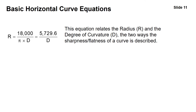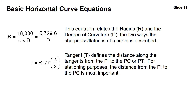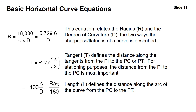Now for some equations. The radius and its relationship to the degree of curvature D describes the sharpness or flatness of the curve: R equals 5729.6 divided by D, or more completely, 18,000 over pi times D. The tangent length T equals the radius times the tangent of delta divided by 2, giving the distance along the tangents from the PI to the PC or PI to the PT. The length of the curve L, from the PC to the PT along the arc, equals 100 times delta divided by the degree of curvature, which also equals the radius times delta times pi divided by 180.